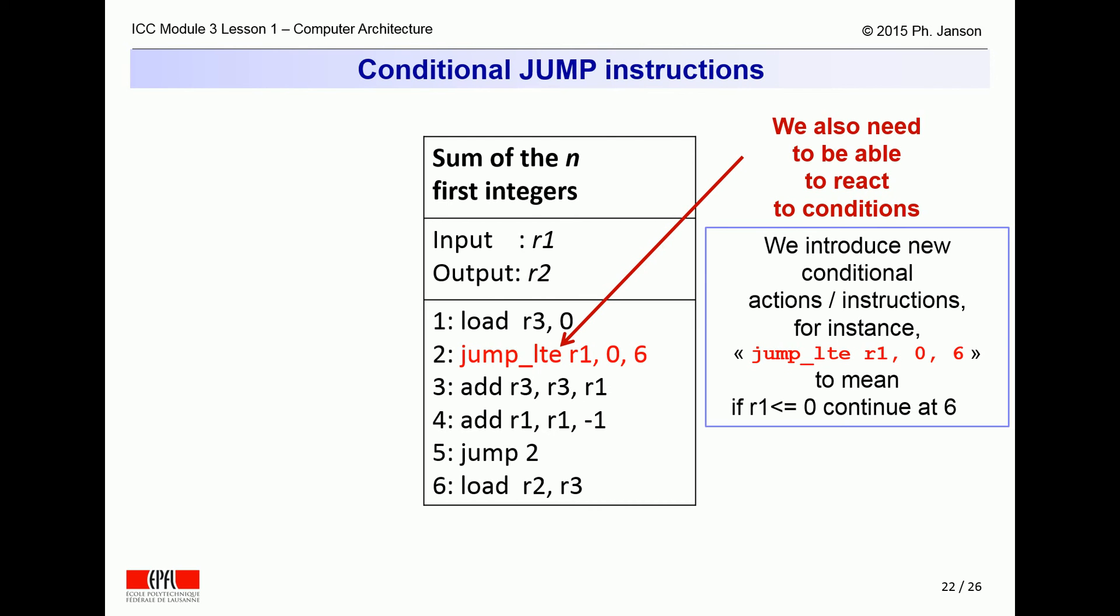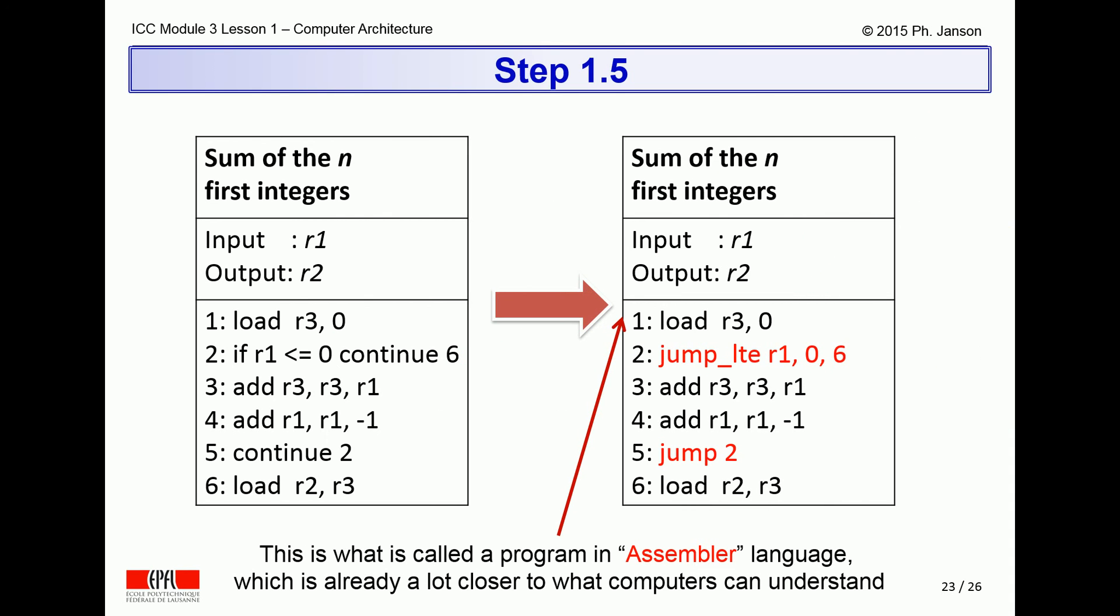To this end, the computer needs special jump instructions such as jump LTE R1, 0, 6 to understand that it should jump to line 6 only if R1 is less than or equal, therefore the LTE, 0. With this latest additional formalism, the entire algorithm can be rewritten as on the right side of this slide.